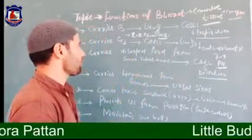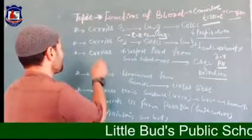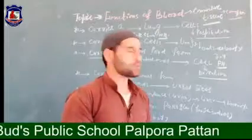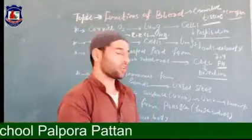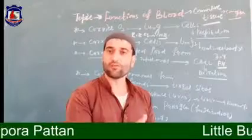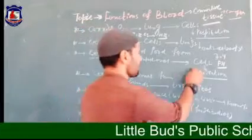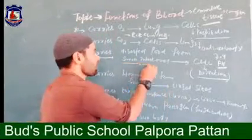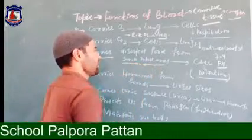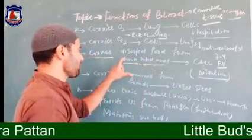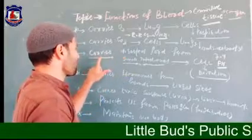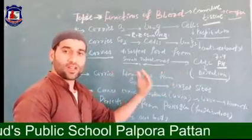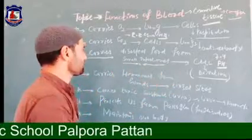Blood also carries the digested food from the small intestine to the cells for oxidation or respiration. The small intestine is the complete site of digestion in human beings, where food is transported from the small intestine into the blood and then to the targeted sites — that is, the cells — through blood.